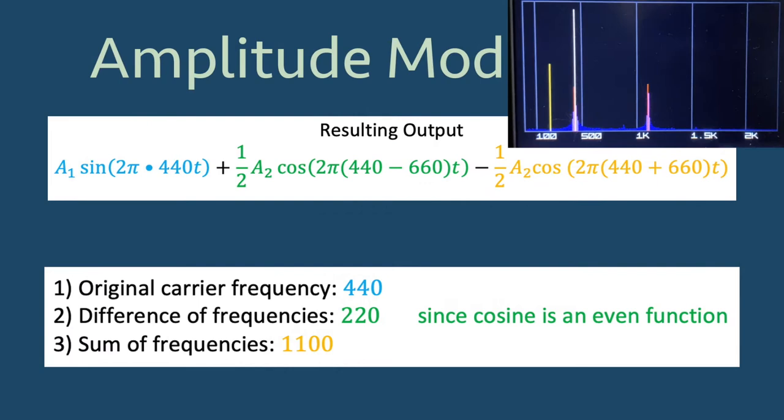For example, if we let f1 equal 440 Hz and f2 equal 660 Hz, then the resulting output will have the frequencies 220, 440, and 1100 Hz represented after amplitude modulation.